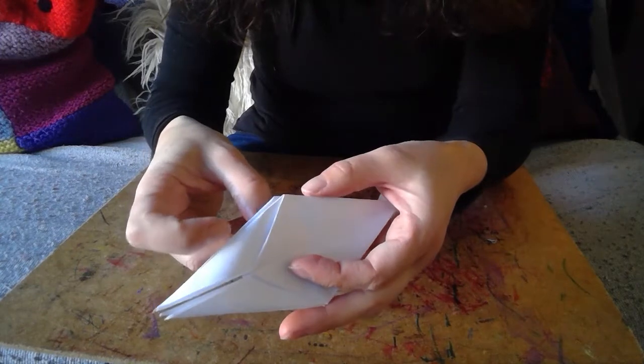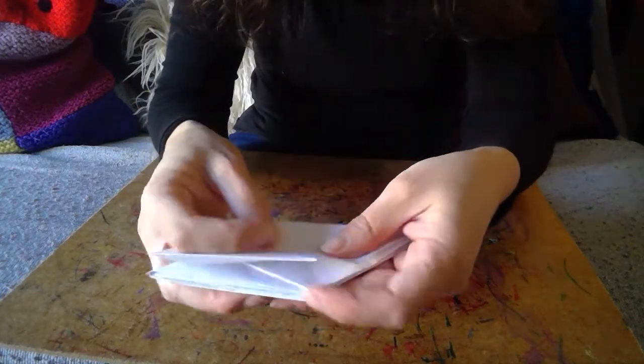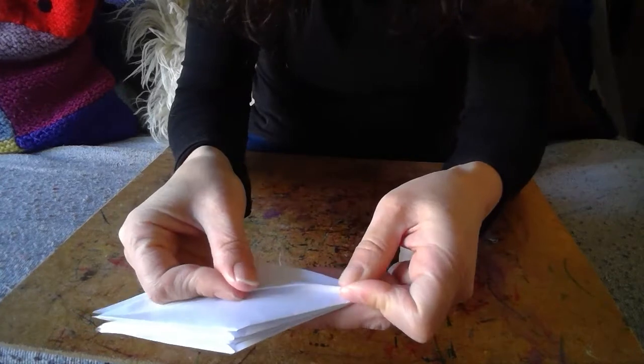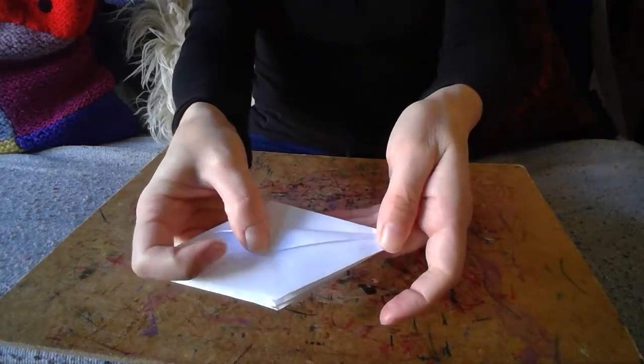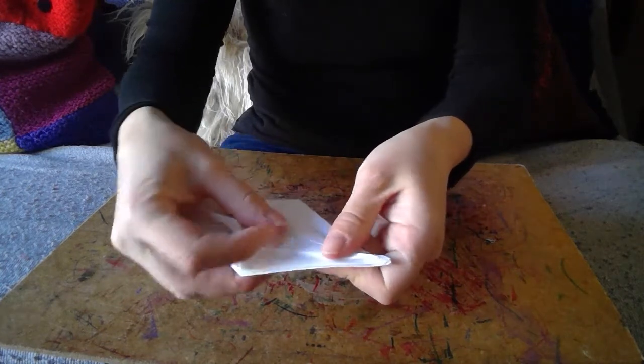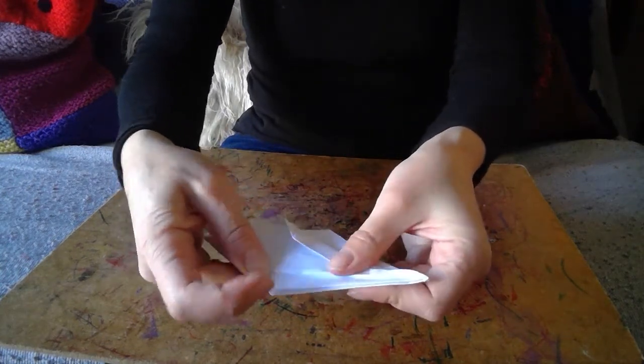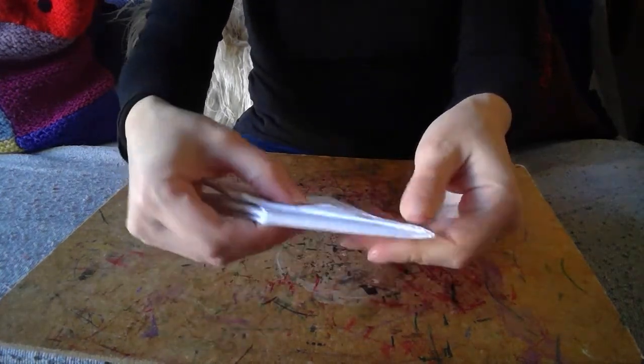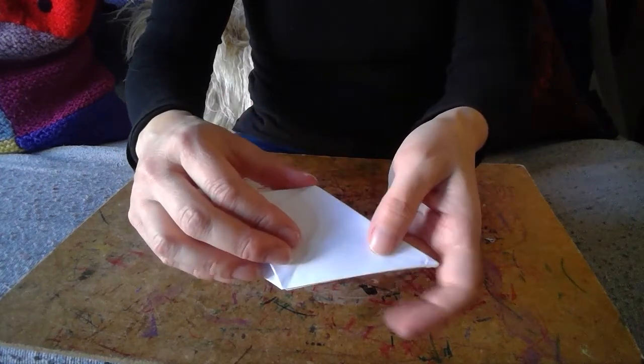So next we're going to tighten the flower. So I'm just flicking through to a smooth side. And folding it to the middle. On this side. And I'm going to do that on all the sides.